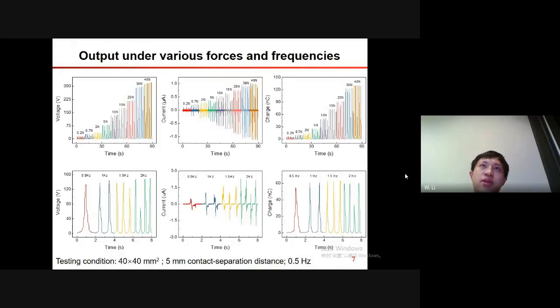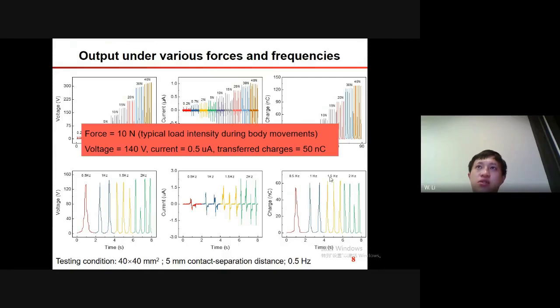A 40 times 40 square millimeter device was fabricated to test the output characteristics of the NF-TENG. As you can see, with increased force, the voltage, current, and transferred charges increased fast and then saturated. As the load force applied on the NF-TENG increased, the contact between the two triboelectric layers were more intimate, and thus the effective contact area accordingly increased until it reached a maximum. The voltage, current, and transferred charges were as high as 140 volts, 0.5 microamperes, and 50 nanocoulombs, respectively, under the load force of 10 N. And this force is a typical load intensity during our body movements.